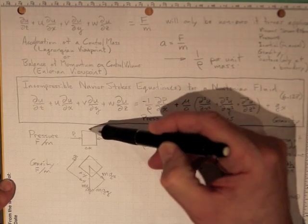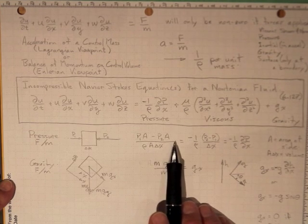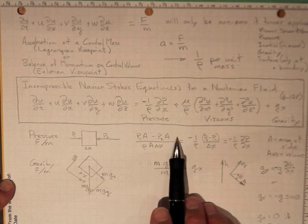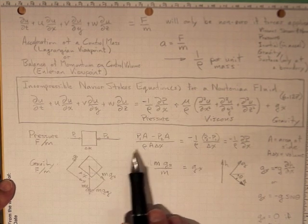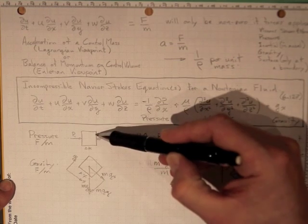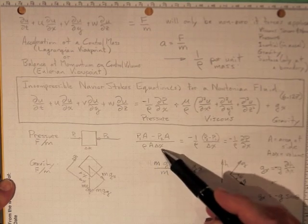So we're not interested in the pressure acting here or the pressure acting here because they aren't pushing in the x-direction. The mass will be the density times the volume. If this is the area here, then the area times delta x will be the total volume.